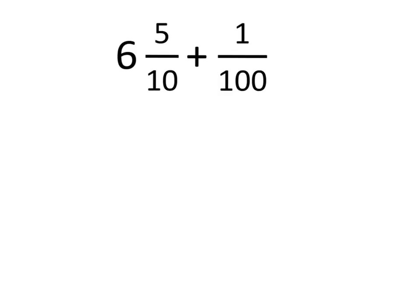First one: 6 and 5 tenths plus 1 hundredth. So what we want to do, like we've been doing in our previous lessons, is take this denominator of tenths and rename it into a hundredth. So let's remove that whole 6 — we don't need the 6 right now. Let's look at 5 tenths.